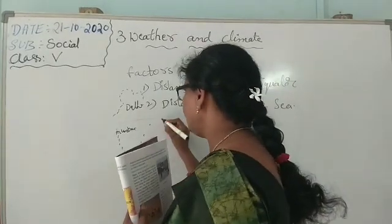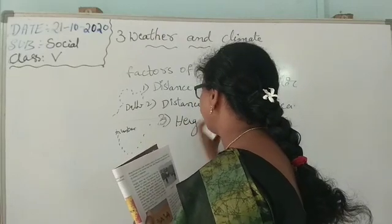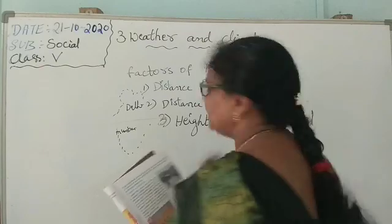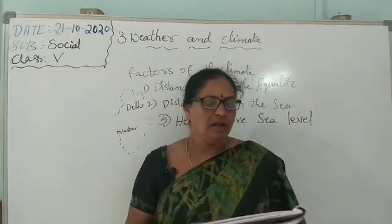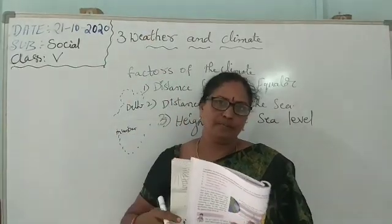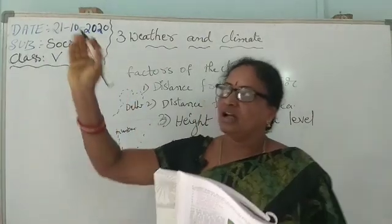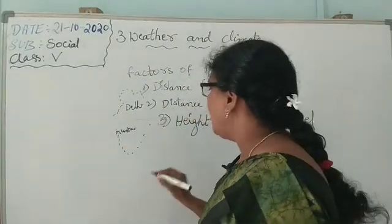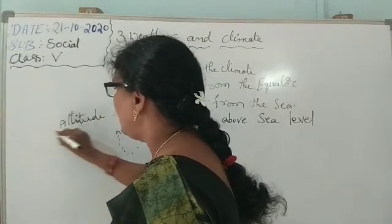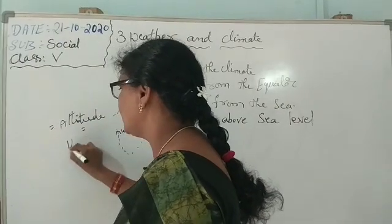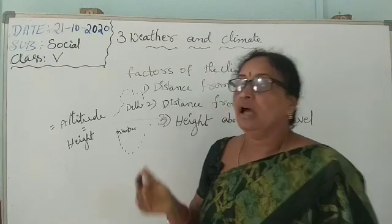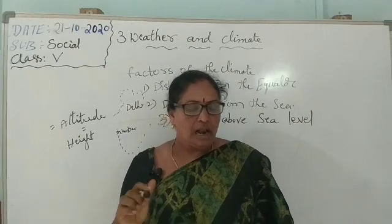The next factor is height above sea level. Height above the sea level is called the altitude of a place. Altitude means height — for example, the height of a building or a mountain.